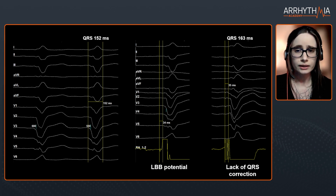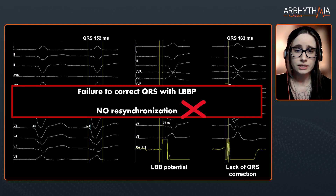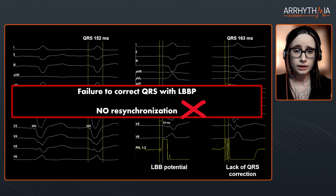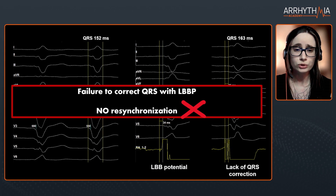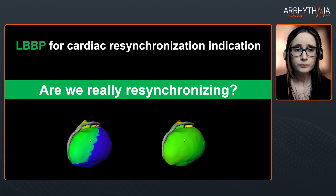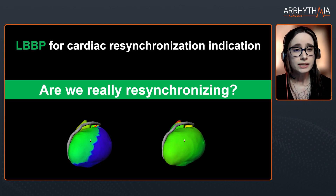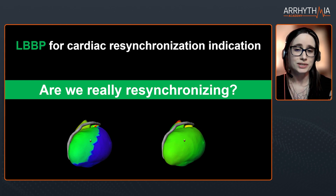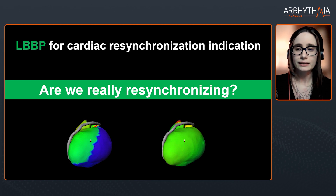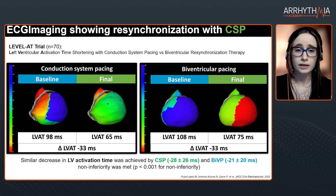Another example: with interventricular conduction disease, we are doing left bundle branch pacing and capturing selectively, however we are not correcting the QRS. This is a problem because our patients have a CRT indication, and if we are not resynchronizing, we are not giving them the best alternative — because we all know the gold standard for resynchronization is biventricular pacing. So for these patients we would like to know if we are truly resynchronizing, and we showed this in the Level-AT trial.